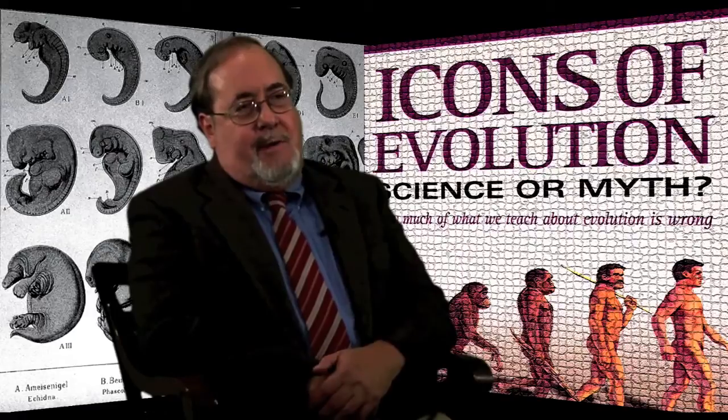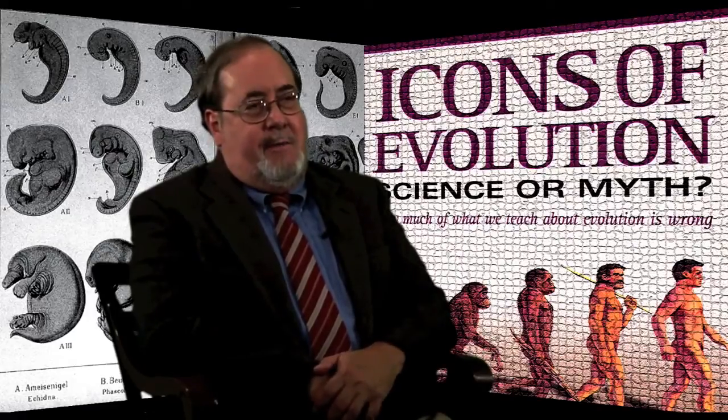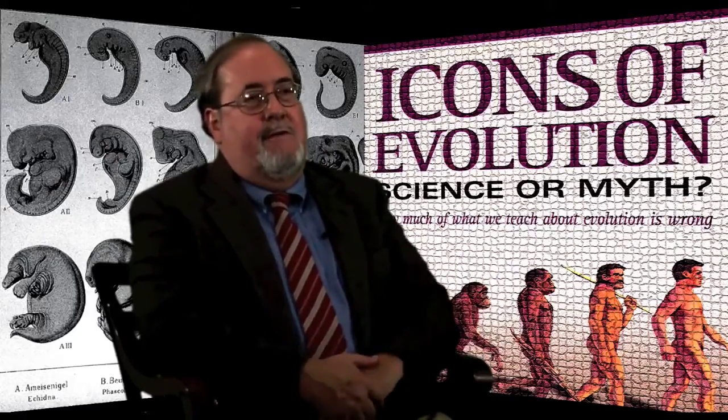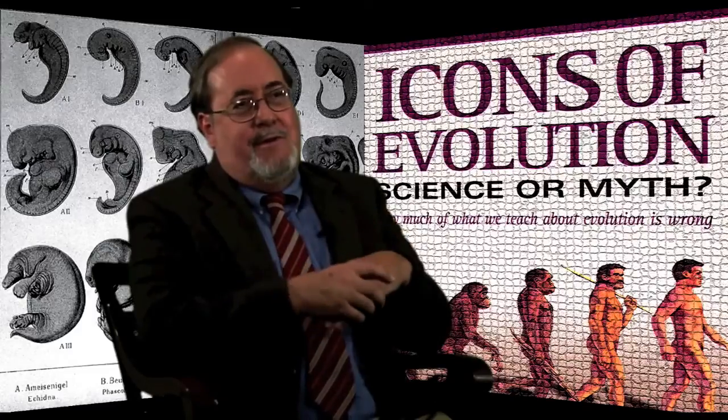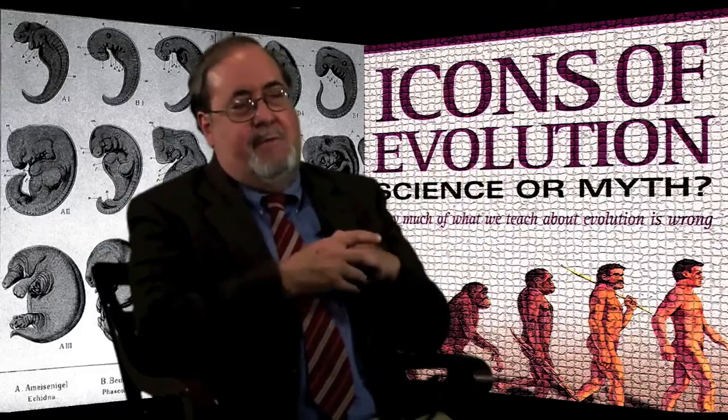After I wrote about Haeckel's embryos in 2000, the pattern among people who were critical of my book became quite typical. First, they started quietly taking the drawings out of the textbooks. Haeckel's embryos are hard to find in textbooks now, although some still have them. Or they replaced Haeckel's drawings with redrawn versions or in some cases with actual photographs, but the photographs are only of those embryos and stages that happen to fit the Darwinian story. So the evidence is still being widely misrepresented in textbooks.